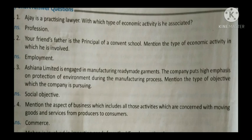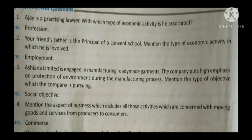The third question: Asiana Limited is engaged in manufacturing ready-made garments. The company puts high emphasis on protection of environment during the manufacturing process. Mention the type of objective which the company is pursuing. Business objectives can be mainly divided into two types: economic objectives and social objectives. Here, protection of environment comes under social objectives, so the answer is social objectives.